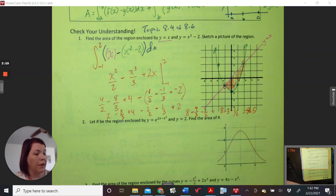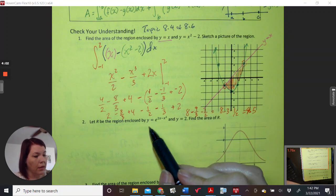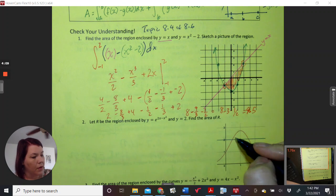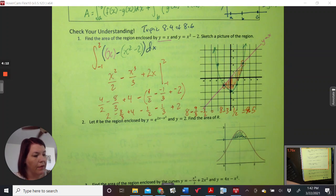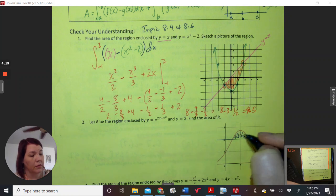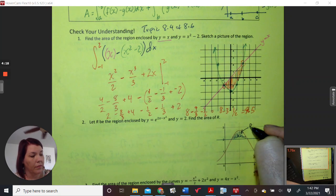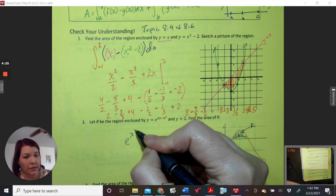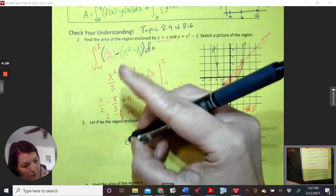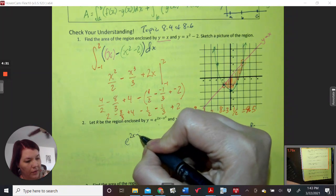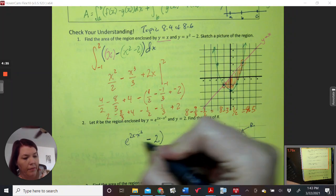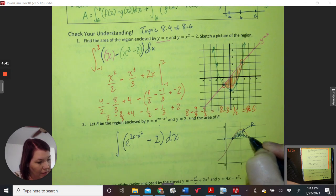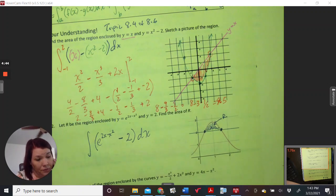Let R be the region bound by y equals e to the 2x minus x squared and y equals 2. So that's this region. Find the area of R. So this is R. Well, clearly, this funky shape goes above 2. So we're going to have e to the 2x minus x squared minus y this time, dx, the integral. Now, here's the hard part. What is this and what is that? So that's where this thing equals that thing.